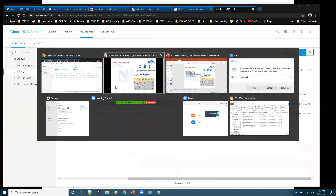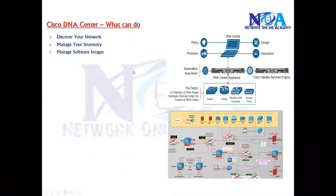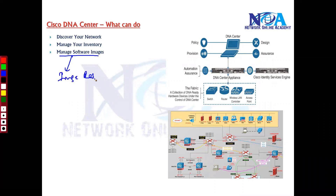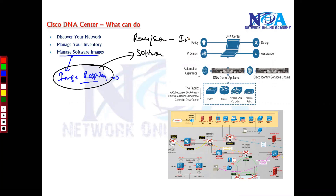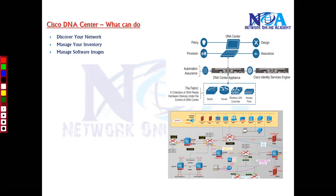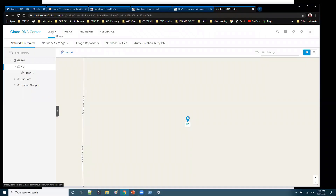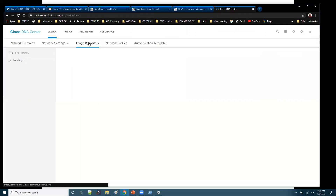Apart from that, DNA Center also helps you manage software images. Inside the DNA Center there is a specific option called Image Repository. You can find this option inside Design, and then there is something called Image Repository. It is going to store all the software images — for routers and switches, the IOS images will be stored with image type and image version.